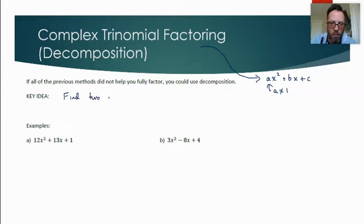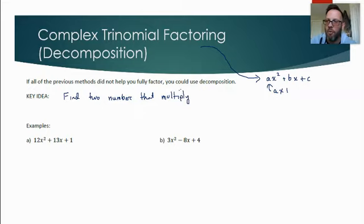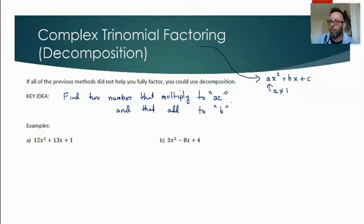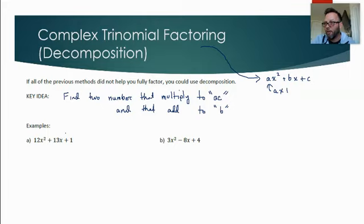The key idea — similar to simple trinomial factoring — is to find two numbers that multiply to the product of a and c, and add to b. We're in grade 12 functions, so I don't need to re-derive the why; this is just how we do it. It's something we hopefully have in the toolbox.